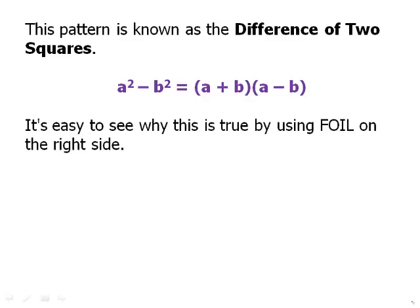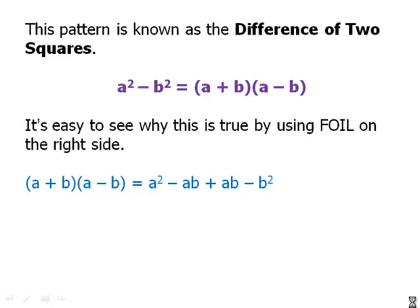It's easy to see why this is true by using FOIL on the right side. Starting with a plus b times a minus b: the product of the first terms is a squared, the outer gives negative ab, the inner gives ab, and the last gives negative b squared. Those two cross terms, negative ab and positive ab, cancel. So we're just left with a squared minus b squared. This is an extremely elegant pattern, and precisely why tests are absolutely in love with it.